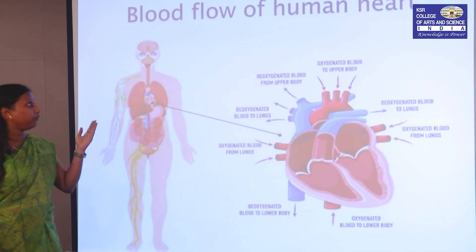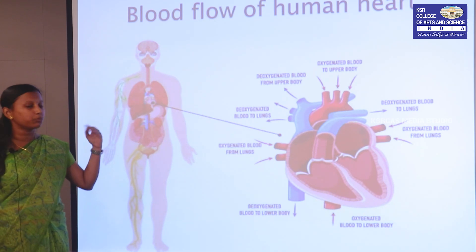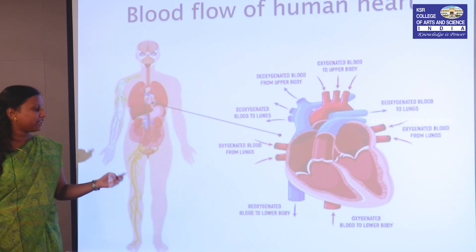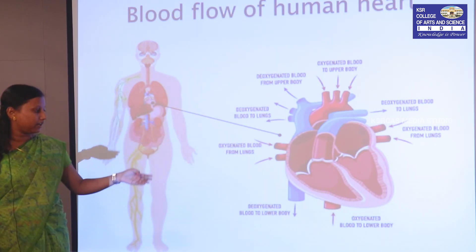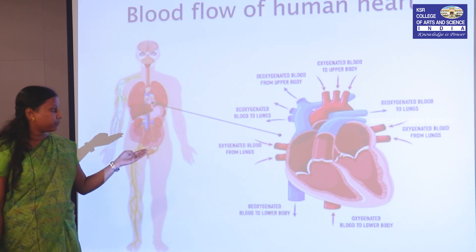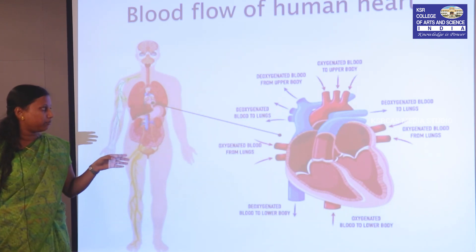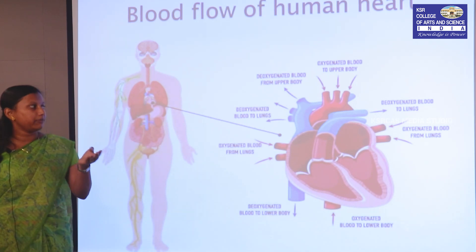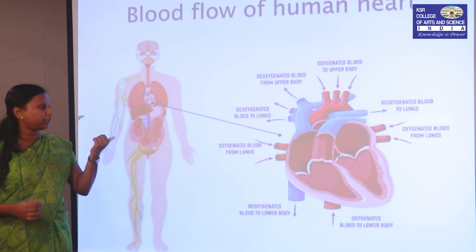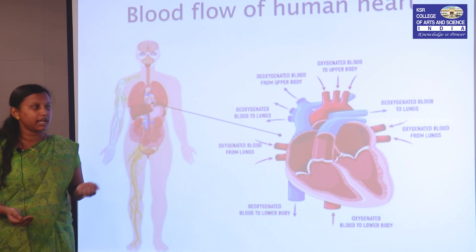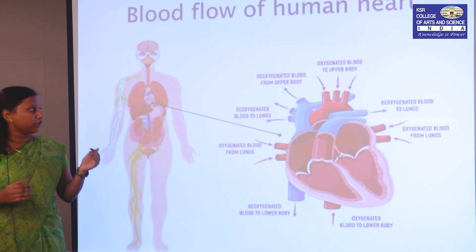The human heart carries deoxygenated blood from the upper part of the body through the superior vena cava and from the lower part of the body through the inferior vena cava to the right atrium. From the right atrium, blood is pushed to the right ventricle through the tricuspid valve. The deoxygenated blood is then carried by the pulmonary artery to the lungs. Pulmonary veins carry oxygenated blood from the lungs to the left atrium. The left atrium allows blood to flow to the ventricle through the bicuspid or mitral valve, and from the ventricle the oxygenated blood is passed through the aorta to the whole body.